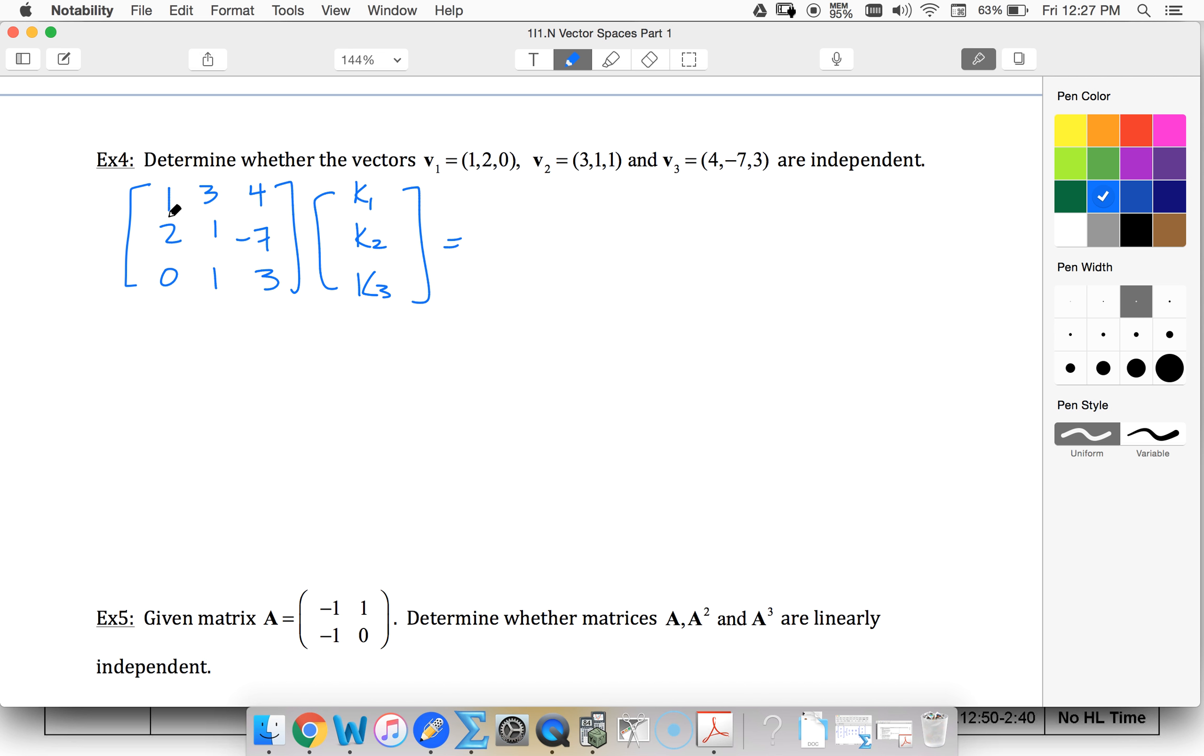And then if I look at my multiplication here, I can see that I have not set this up correctly, because if I multiplied this out, I would get k1 plus 3k2 plus 4k3. Oh, that is what I want. All right, good. So 0, 0, 0 as my zero vector.